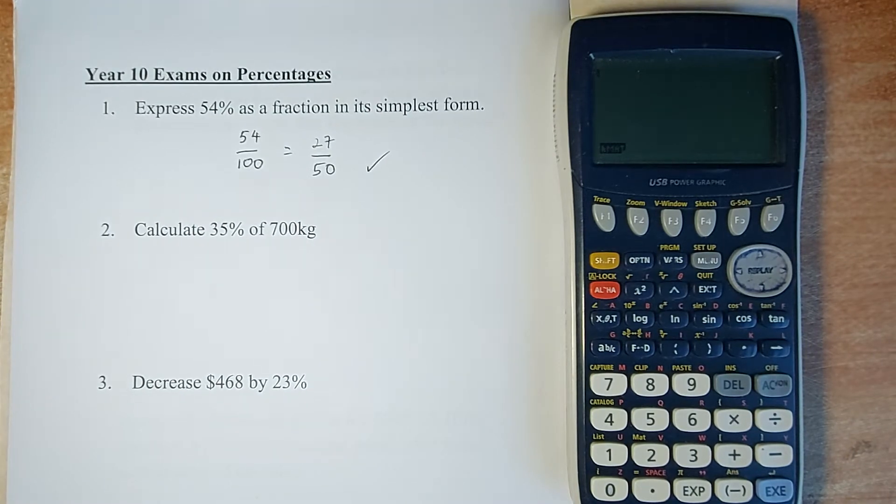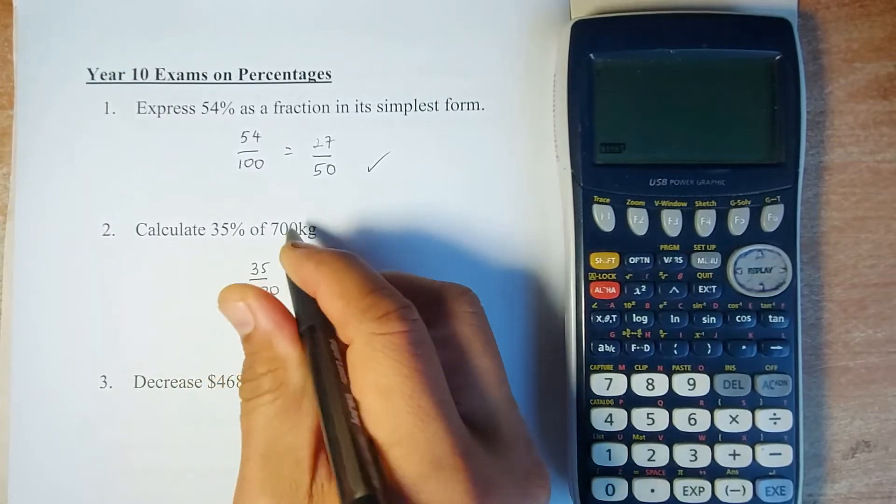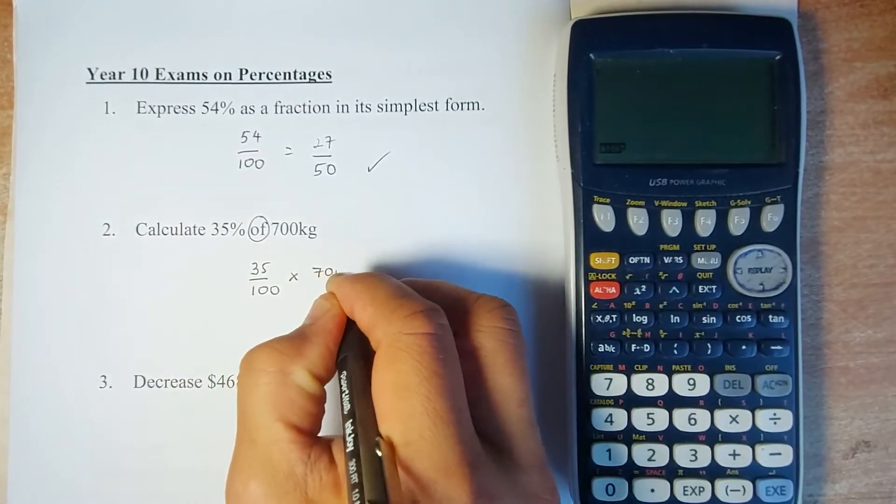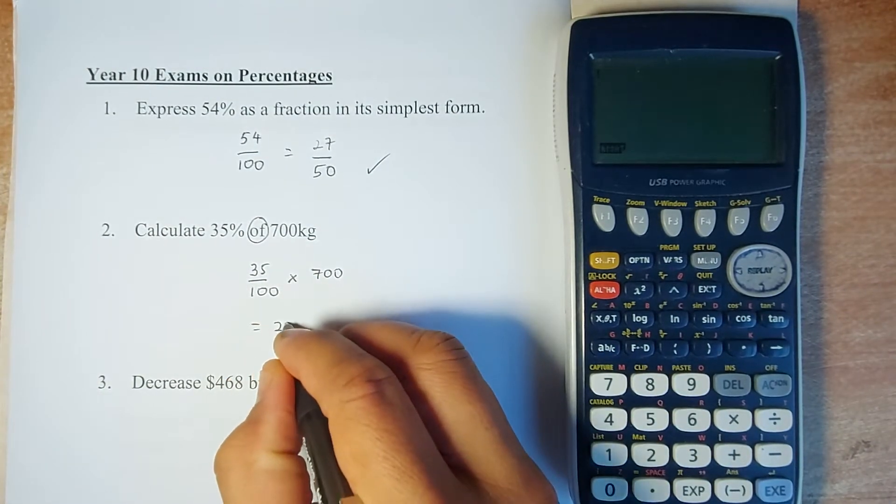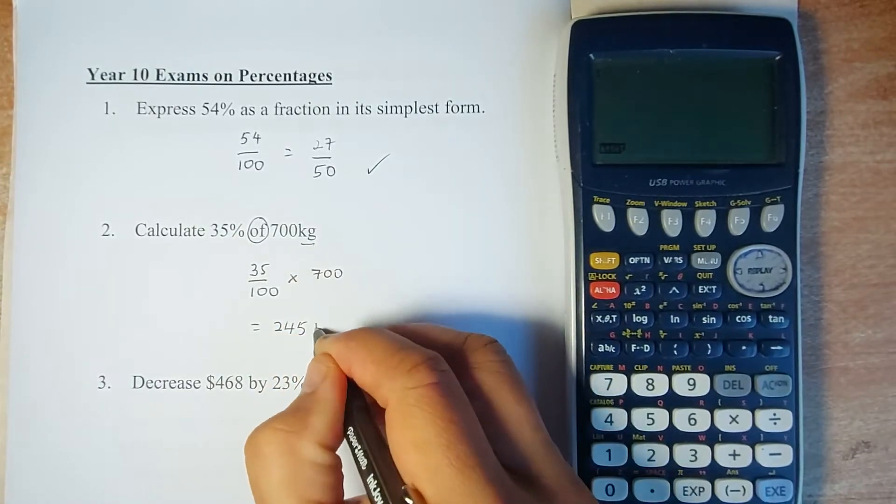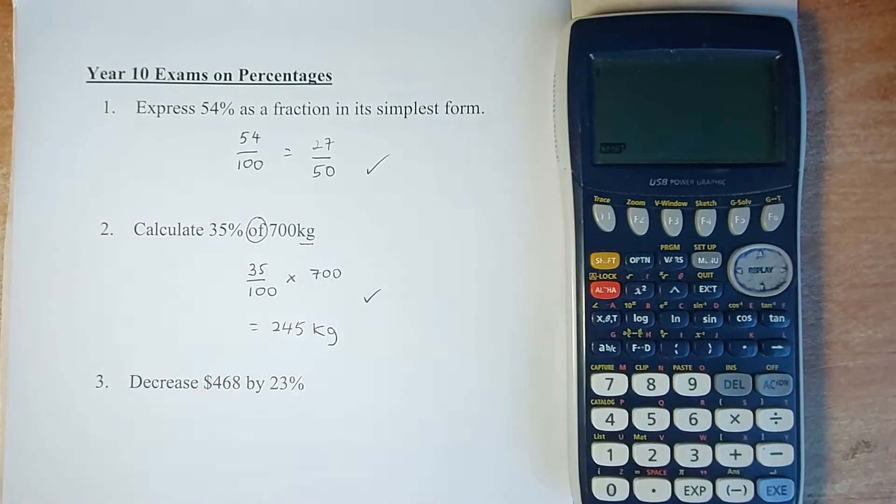Next question: calculate 35% of 700. This is very popular in exams. You calculate the percentage of an amount, so 35% means 35 out of 100. In mathematics, 'of' means you multiply by 700. Put it in your calculator and you will get 245 kilograms. Make sure you don't forget your unit is in kilograms.